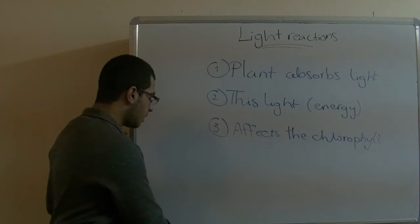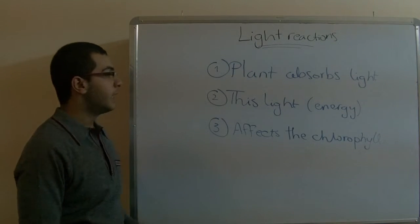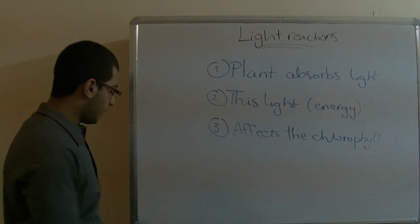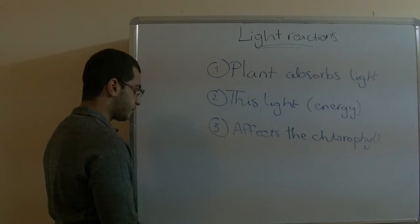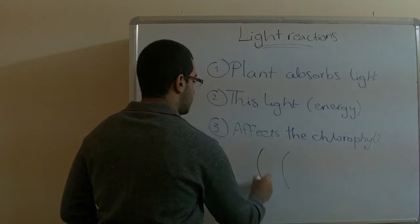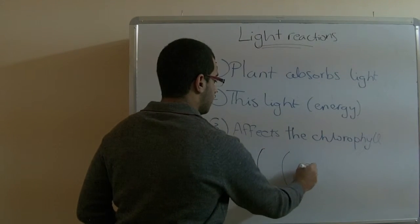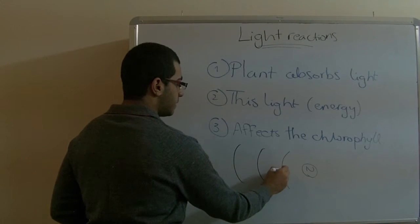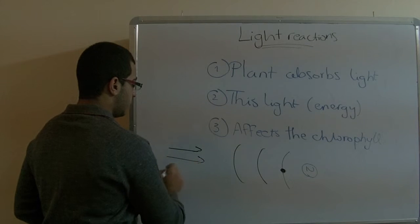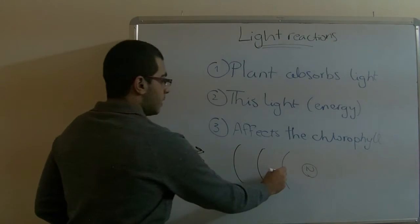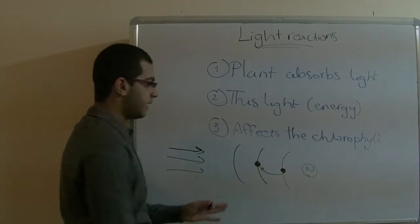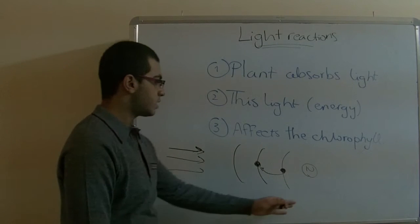The chlorophyll is affected by the light energy that it absorbs because the chlorophyll contains energy levels. Assume that this is an electron. When the light energy goes into the chlorophyll atom, this electron is shifted up to a higher energy level, indicating that it gained more energy.